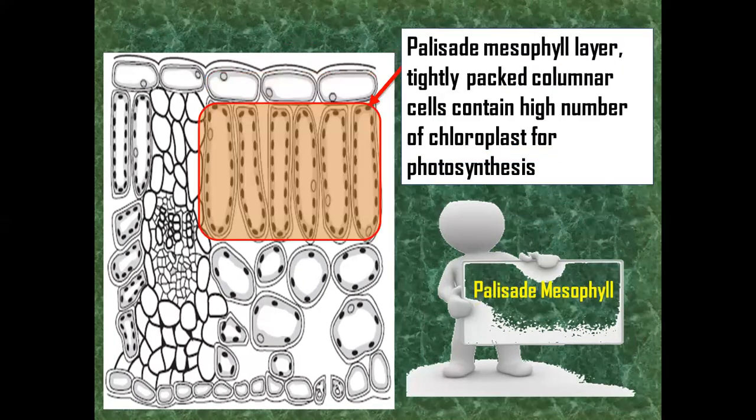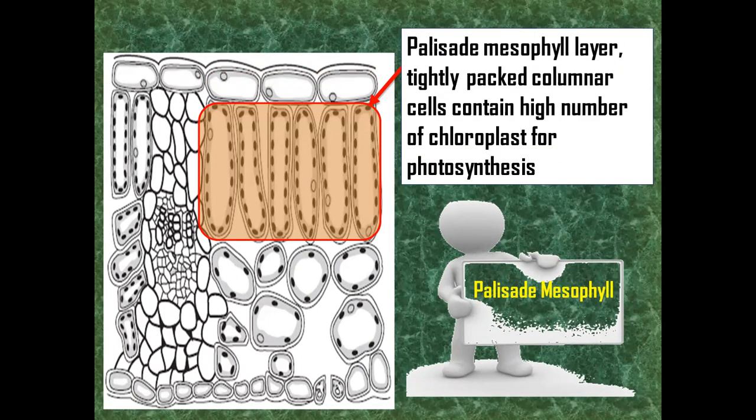Below the epidermis, we have the palisade mesophyll. These columnar cells are tightly packed together, and they contain a lot of chloroplasts. Their main function is to absorb maximum light and perform photosynthesis.